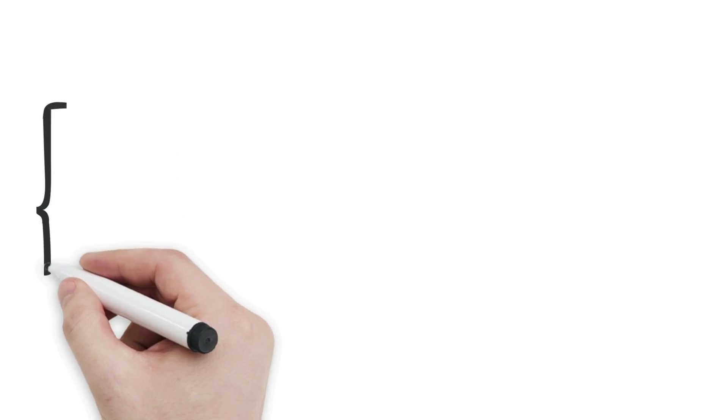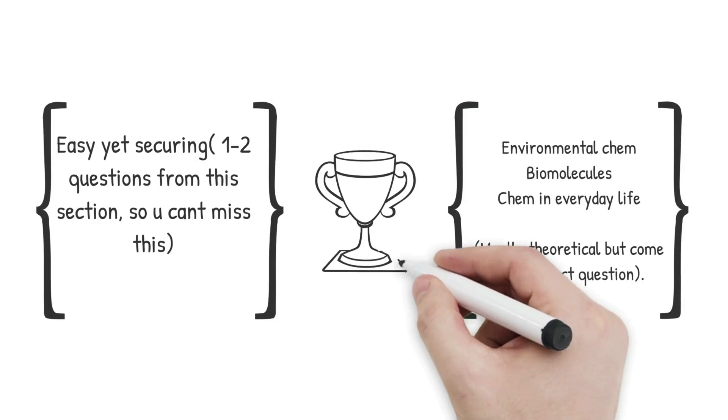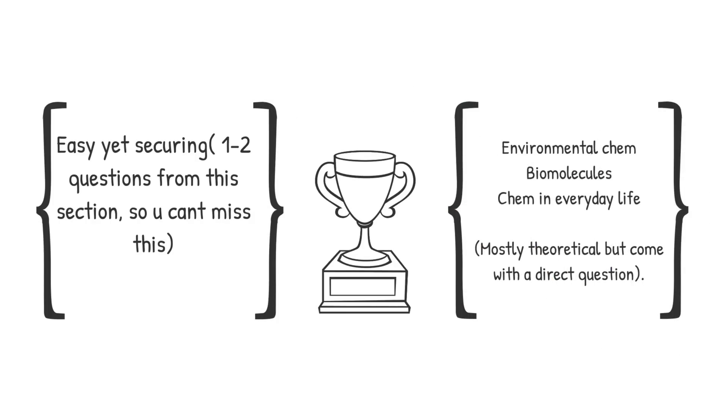Now coming to the last portion which is easy yet scoring. It is environmental chemistry. Biomolecules. Chemistry in everyday life. One to two questions from this section. So you can't miss this section at all. Make sure you do it very well. And mostly it's theory. So you can expect a direct question from this one.